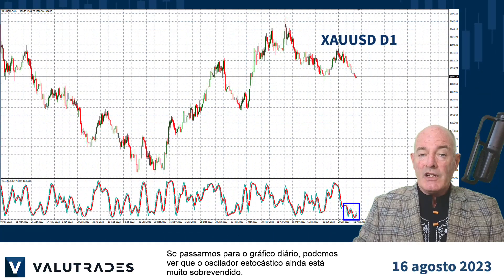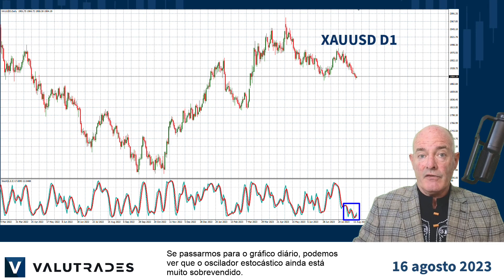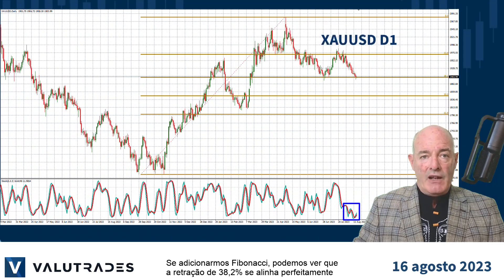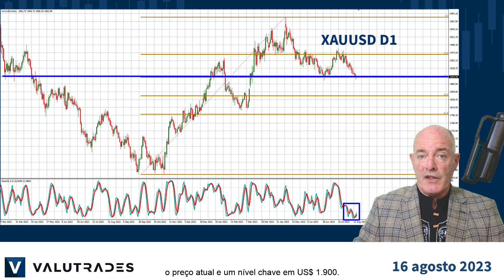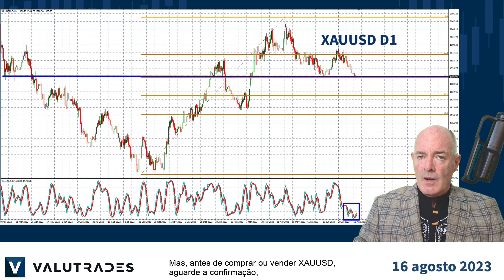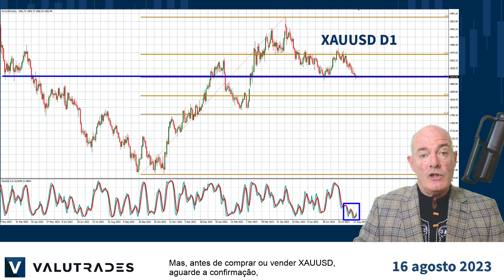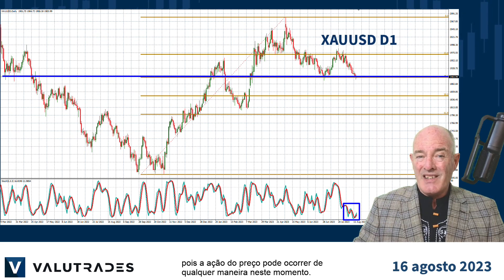If we move out to the daily chart, we can see that the stochastic oscillator is still very oversold. If we add Fibonacci, we can see that the 38.2 retracement lines up perfectly with the current price at a key level of $1900. But before you buy or sell XAUUSD, wait for confirmation as price action could go either way at this point.